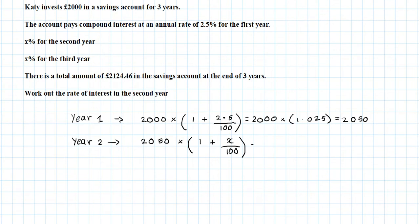And really I don't know what this amount is going to be, so I'm going to leave it as it is. And then for year three, the amount would be £2050 times 1 plus x over 100 from year two.